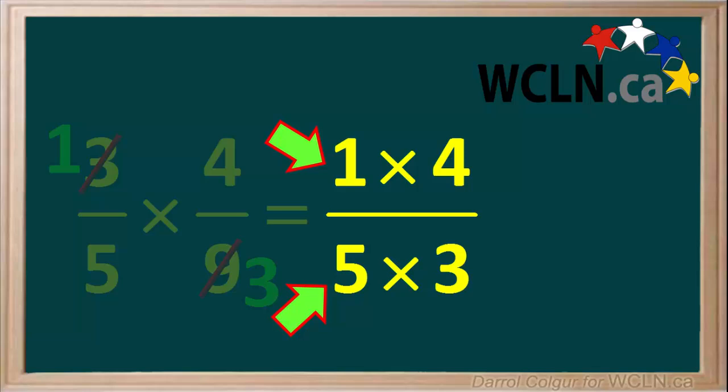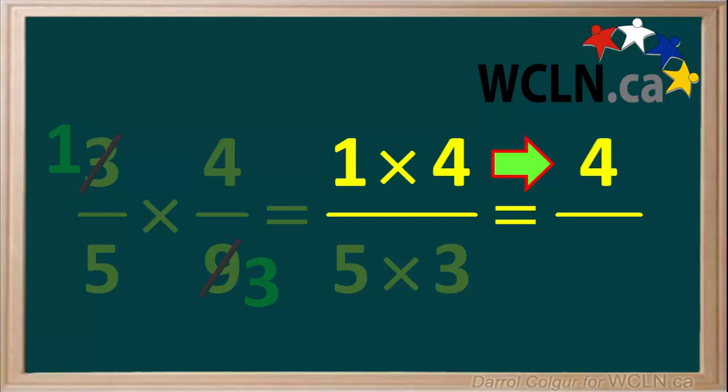So this fraction is 1 times 4 over 5 times 3. We can multiply these two pairs to get a single fraction. In the numerator, we get 1 times 4 is equal to 4.